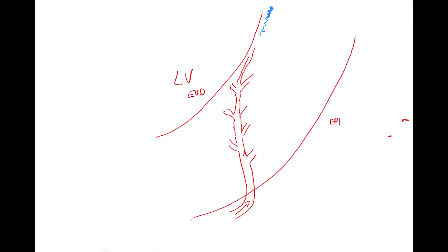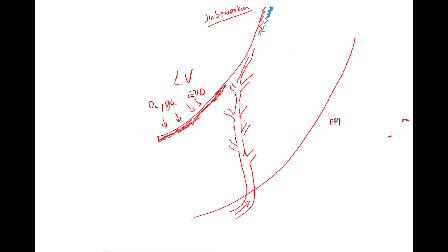Why sub-endocardium? Because the epicardial cells are completely safe and happy — they have everything they need. But the sub-endocardial cells are in a completely bad situation.